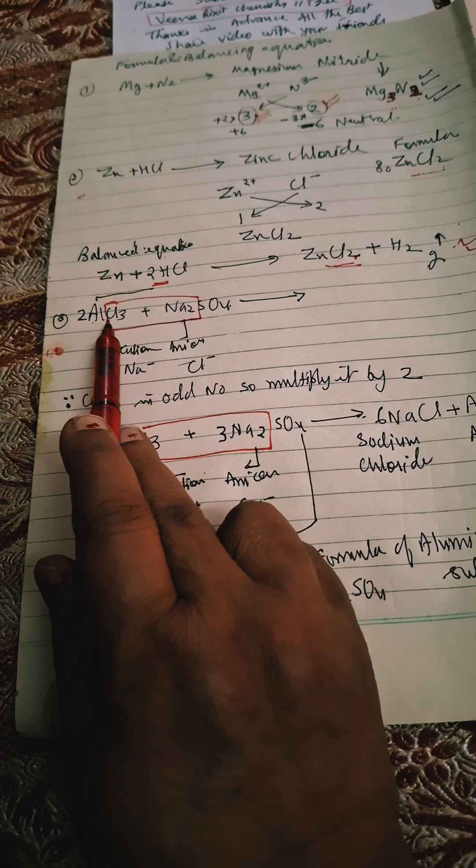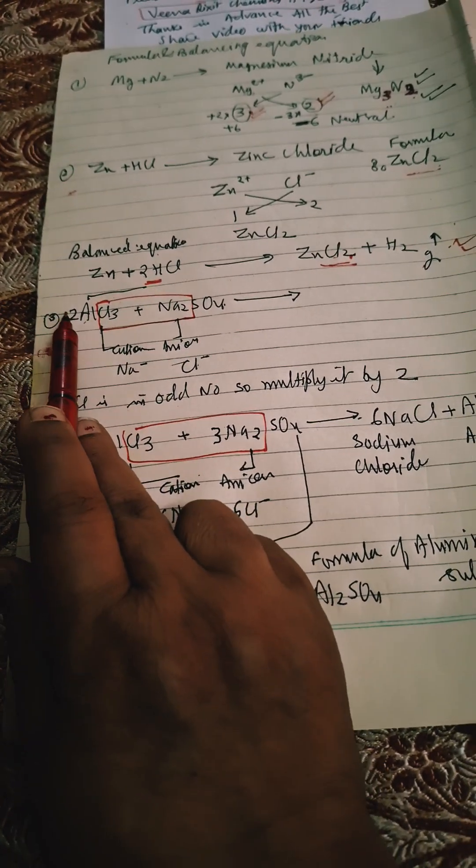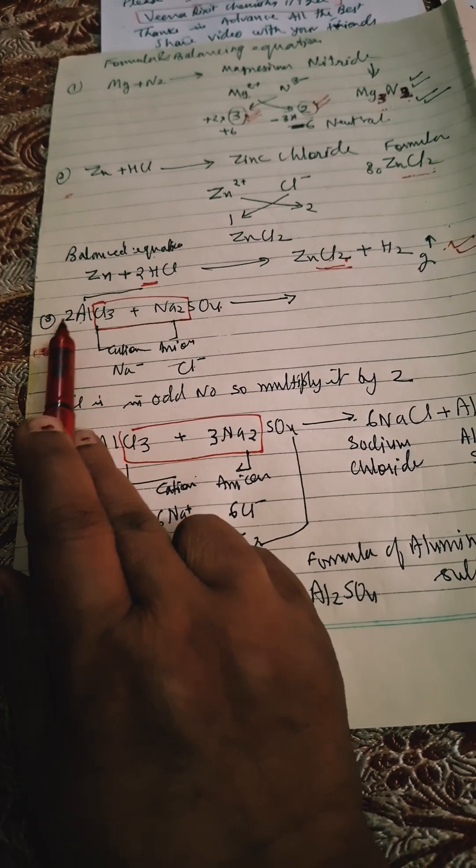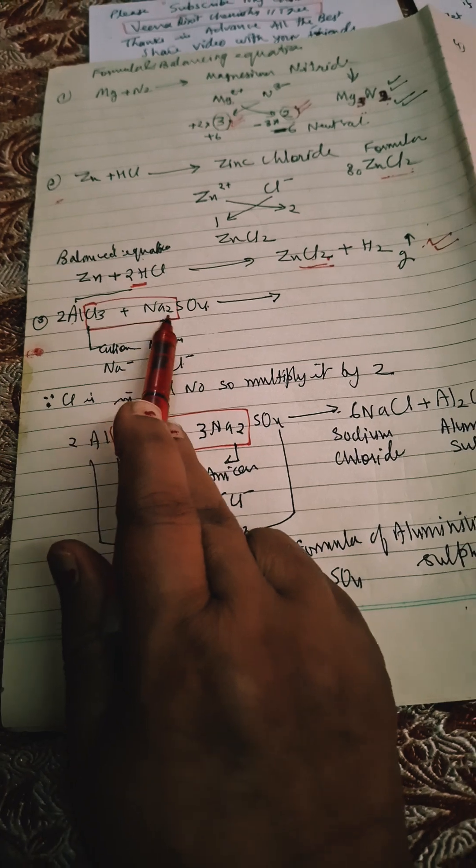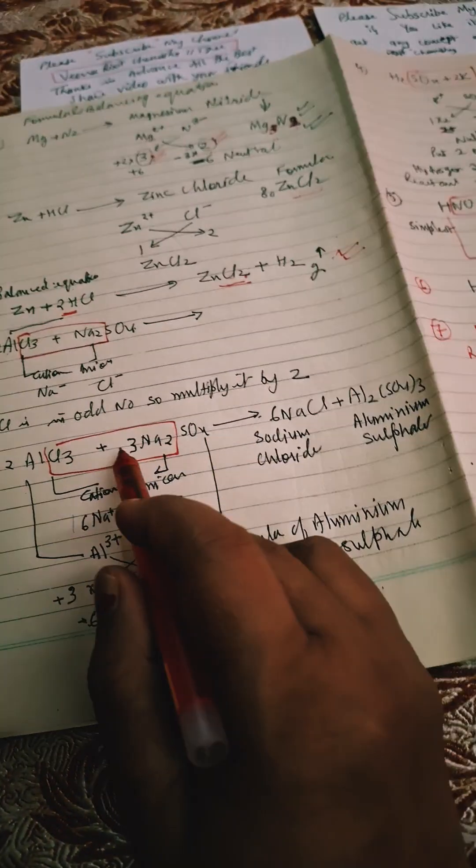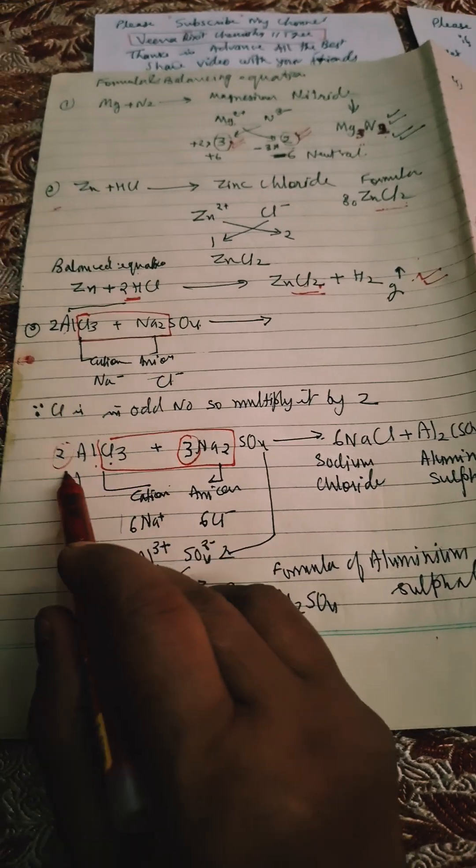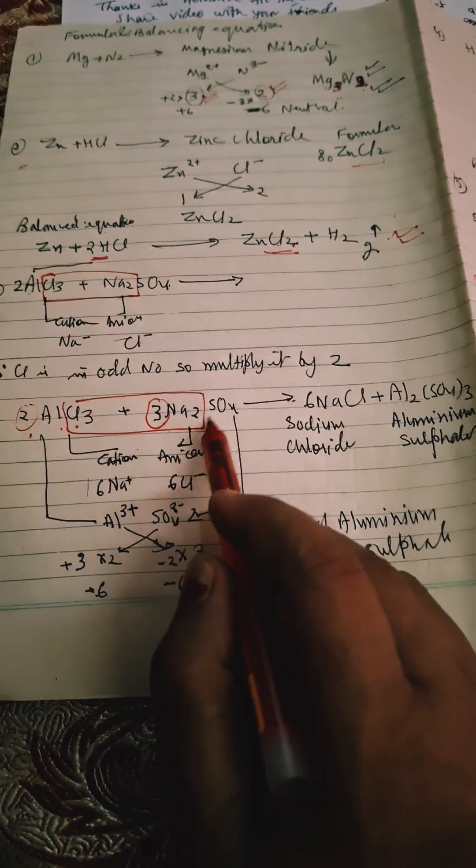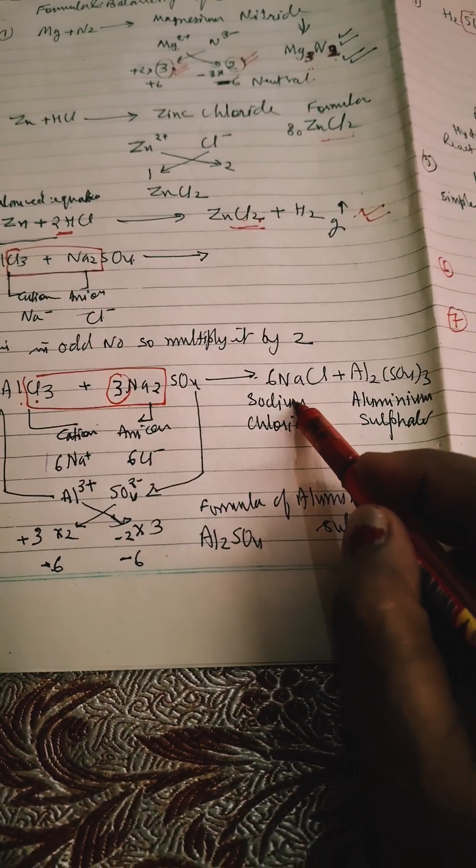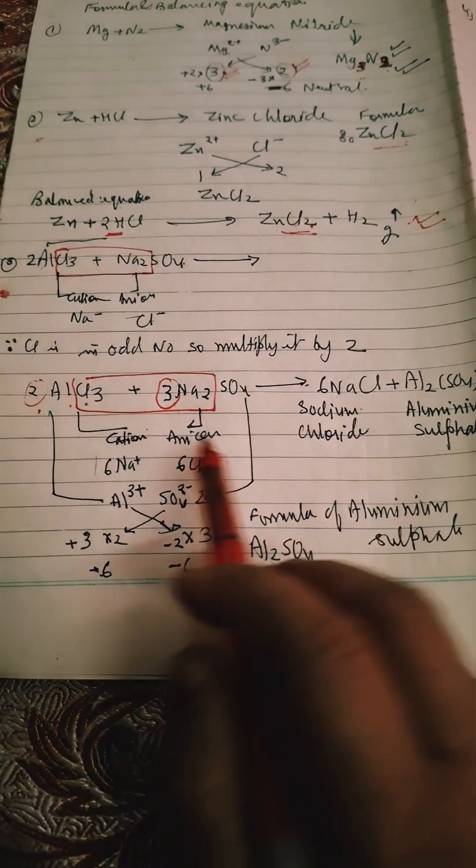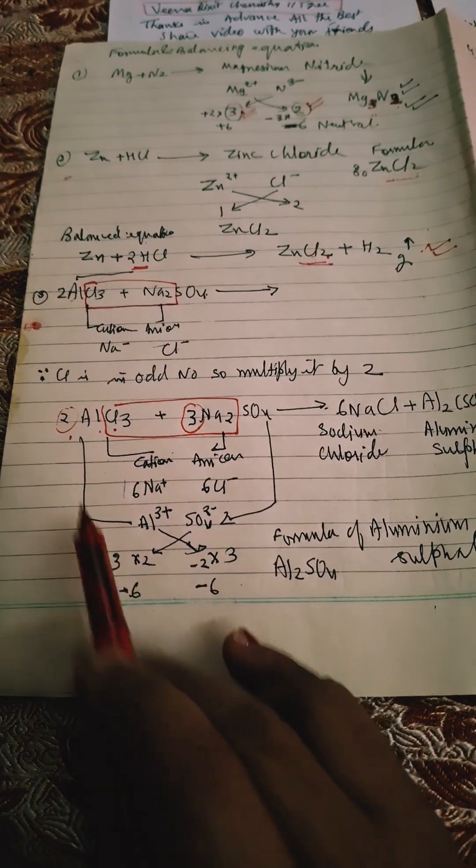So we will make it in even number, so multiply this by 2. Now there are 6 Cl, and here only Na, 2 will be there, so we multiply this by 3. Because we multiply AlCl₃ by 2, so we multiply Na₂SO₄ by 3. So answer will be 6 NaCl plus AlCl₃.